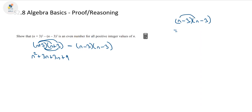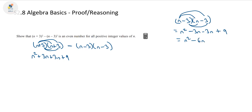We've got n × n = n², n × (-3) = -3n, another -3n, and finally (-3) × (-3) = +9. So if we simplify this, we've got n² - 3n - 3n + 9, which gives n² - 6n + 9.